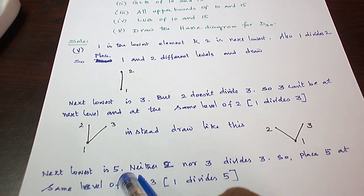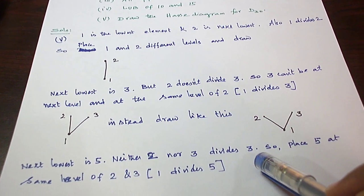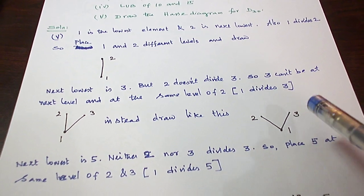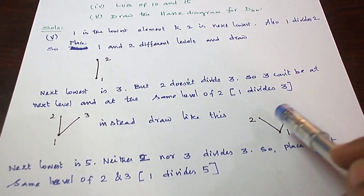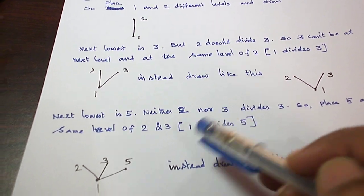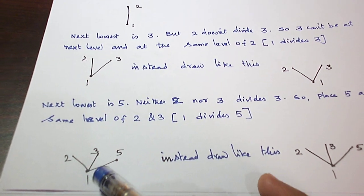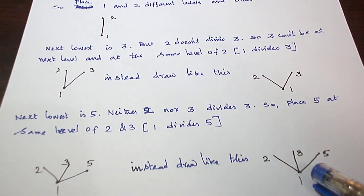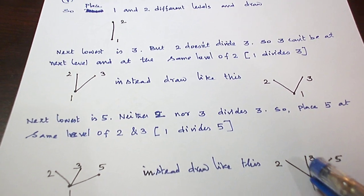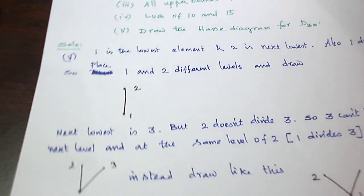Next least element is 5. 2 does not divide 5 as well as 3 does not divide 5, so 5 cannot be put in the next level. It has to be put in the same level of 2 and 3. Just keep in mind 1 divides 5. So 5 is kept in the same level of 2 and 3. Instead of drawing like this, we can draw like this to have a nice look. 1 divides 2, 1 divides 3, and 1 divides 5. Next least element is 6.